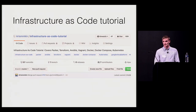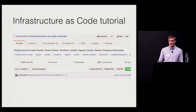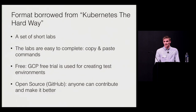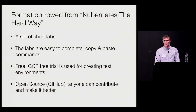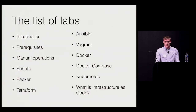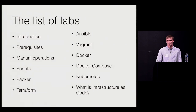The tutorial is available on GitHub and has a pretty straightforward name, infrastructure as code tutorial. In terms of format, it reminds Kubernetes the Hard Way. It consists of a set of short labs that are very straightforward and easy to follow — basically, all you have to do is copy and paste the commands in the right order. The tutorial is completely free, using the Google Cloud Platform free trial for creating test environments, and it's open source on GitHub, which means anyone can contribute and make it better. Every lab, except for the first two, introduces the person to either an infrastructure management method or an infrastructure as code tool.